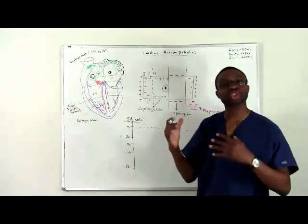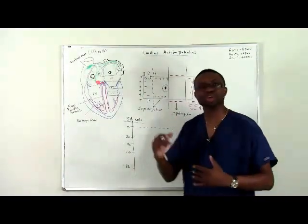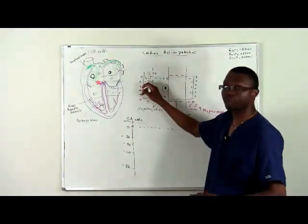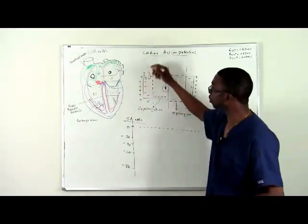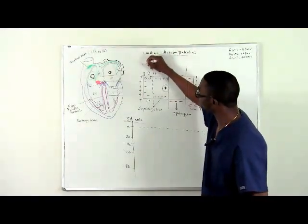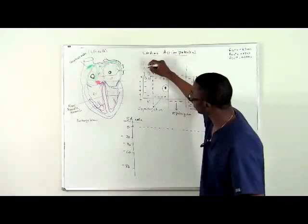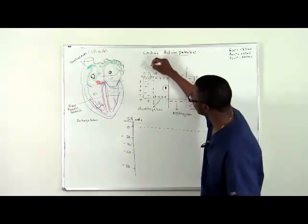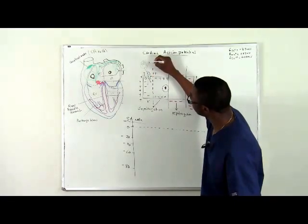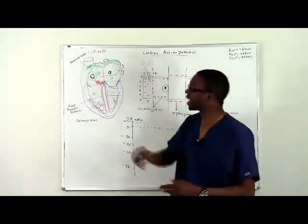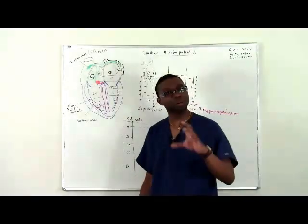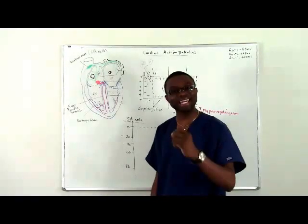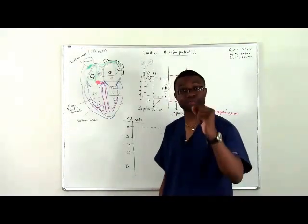These ion channels allow either sodium or potassium to pass through, depending on the probability of the channel opening and what it is permeable to. If it's a sodium channel, it will allow sodium to flow inside the cell. The interesting thing about the SA node is that, unlike a muscle cell — which needs an action potential from an outside stimulus to depolarize — the SA node behaves differently.